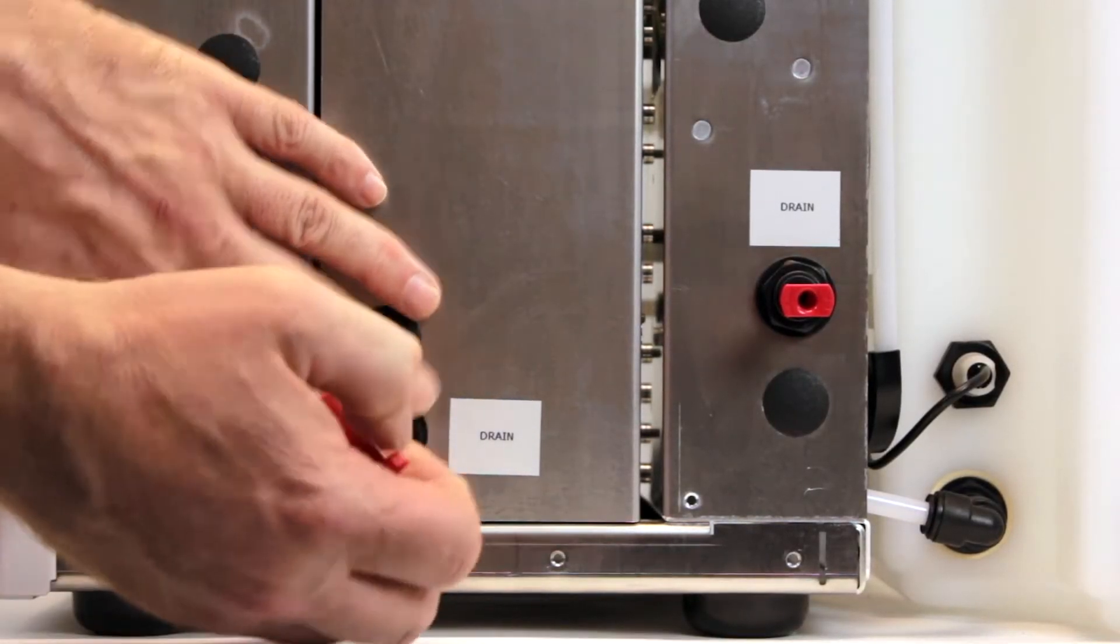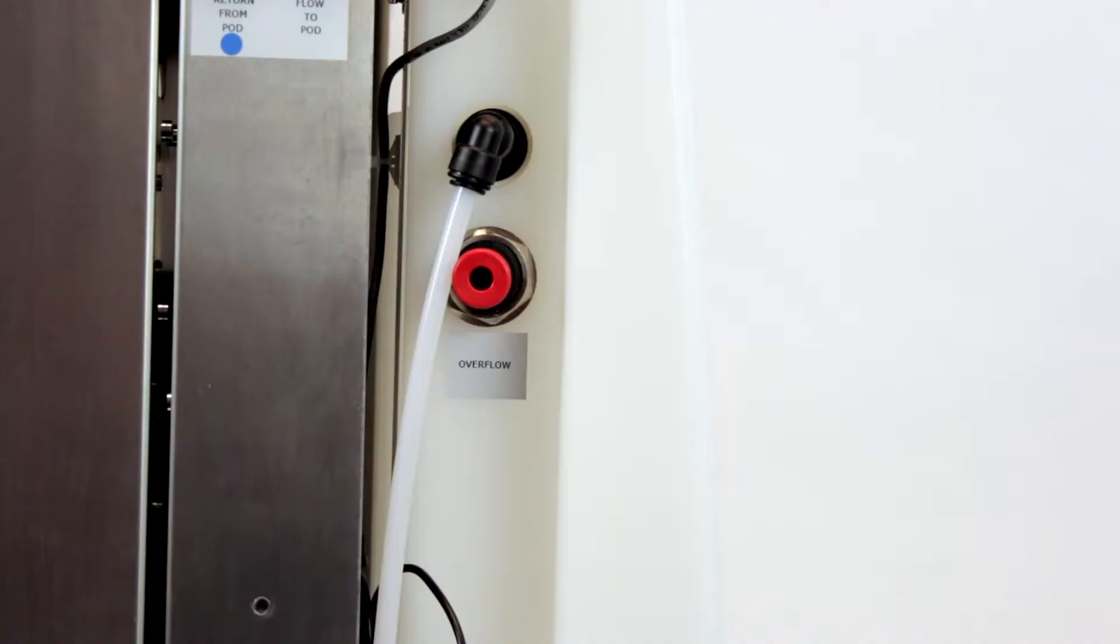First, remove all of the red transit plugs by simply depressing the locking ring and pulling them out.